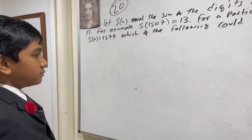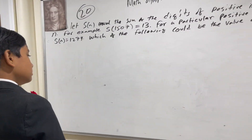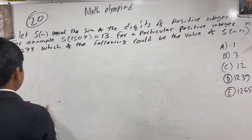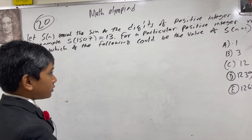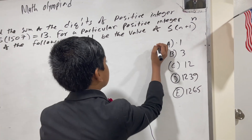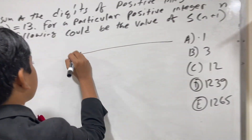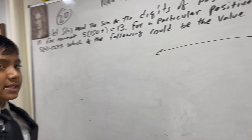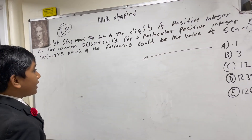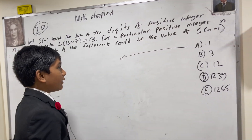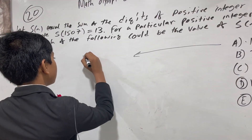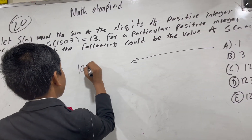Let's understand this problem. First, what if A was correct? Let's do this proof by contradiction. If A was correct, then s(n+1) would have to be 1, and then a repeating sequence of zeros.